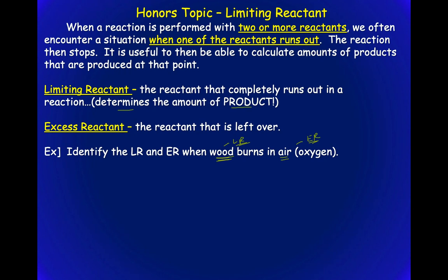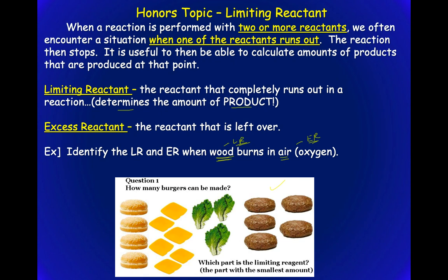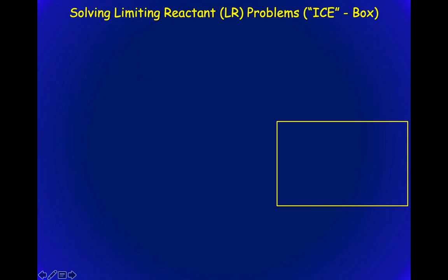Another example: how many burgers can you make? If you have a certain number of buns, cheese slices, and three pieces of lettuce — and each burger needs one of each — you can see you'll run out of lettuce first. So lettuce would be your limiting reactant.